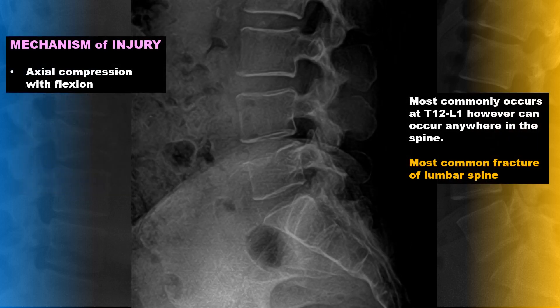The mechanism of injury for compression fracture is axial compression with flexion, and this most commonly occurs at T12-L1, however it can occur anywhere in the spine. It is the most common fracture of the lumbar spine.